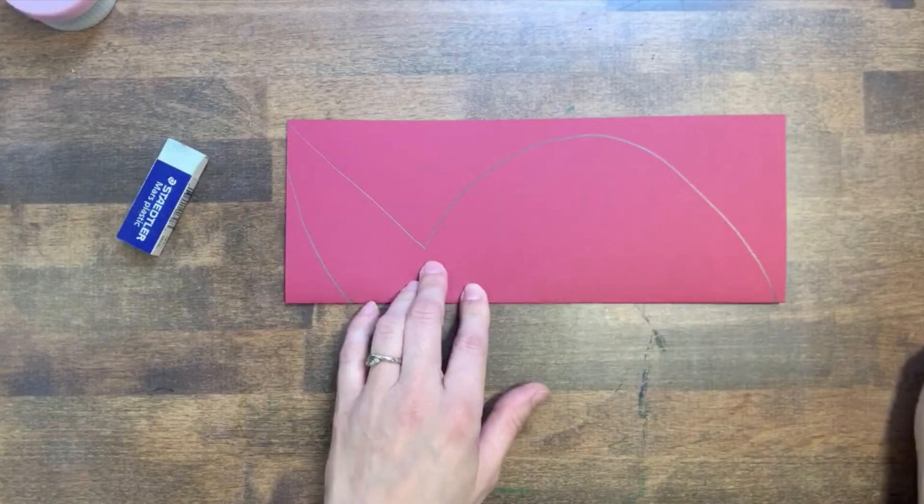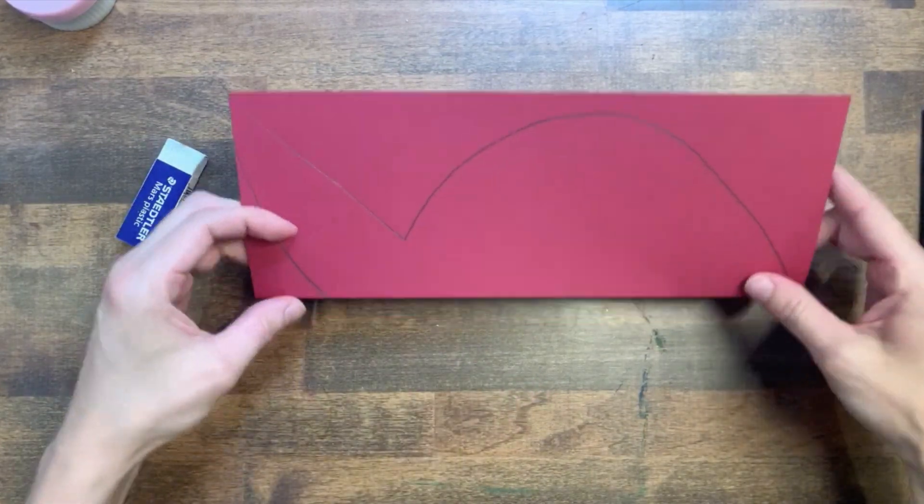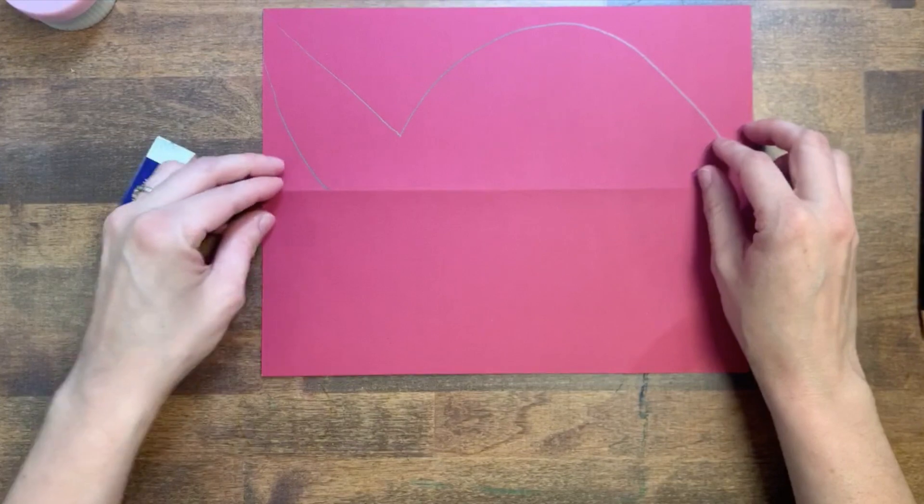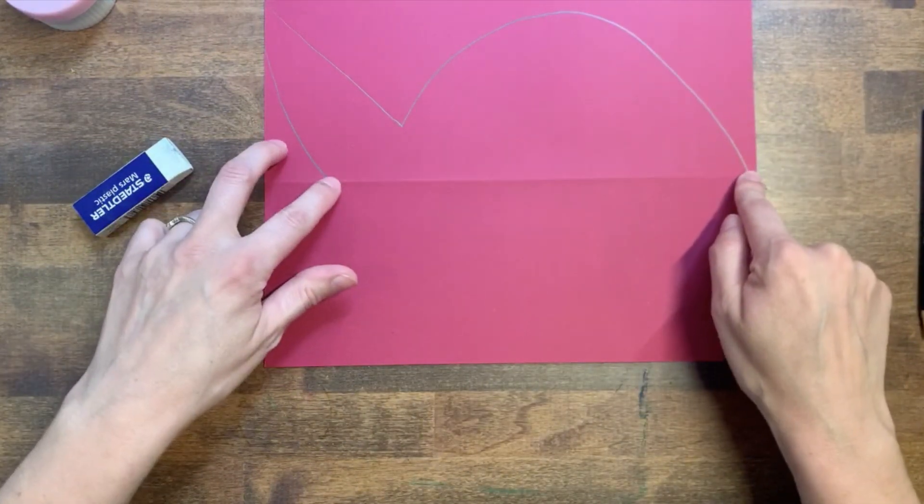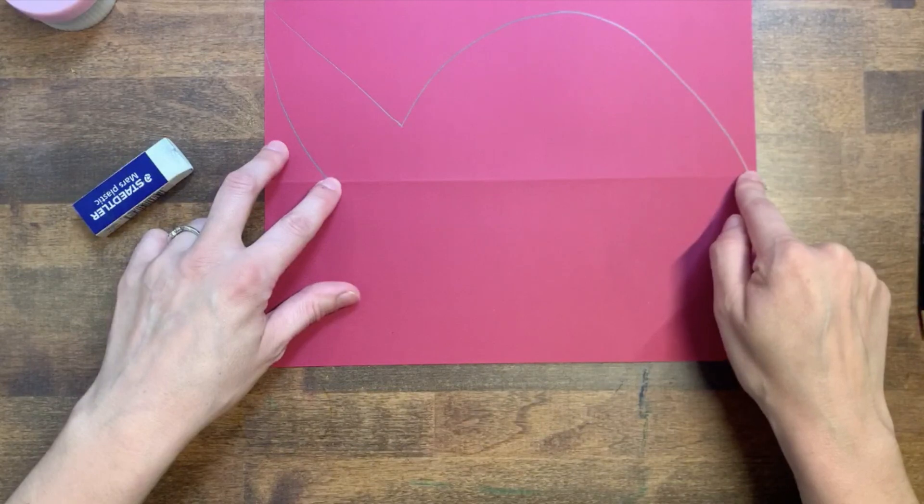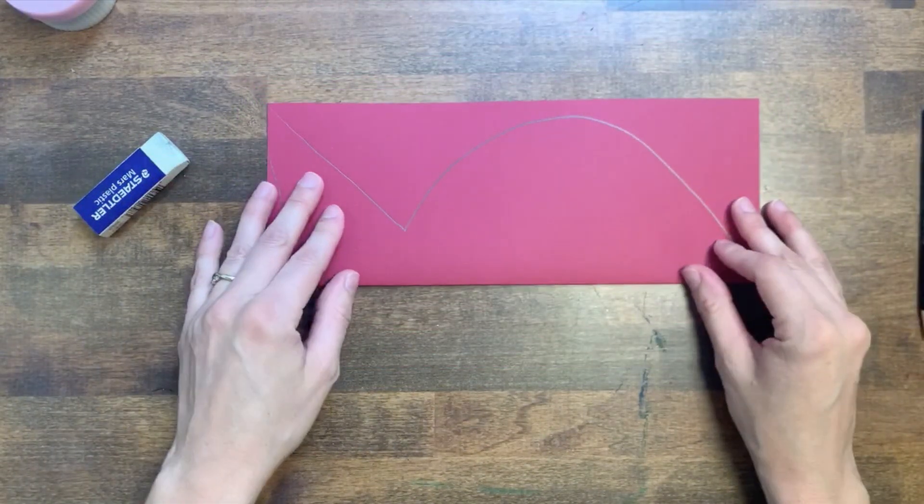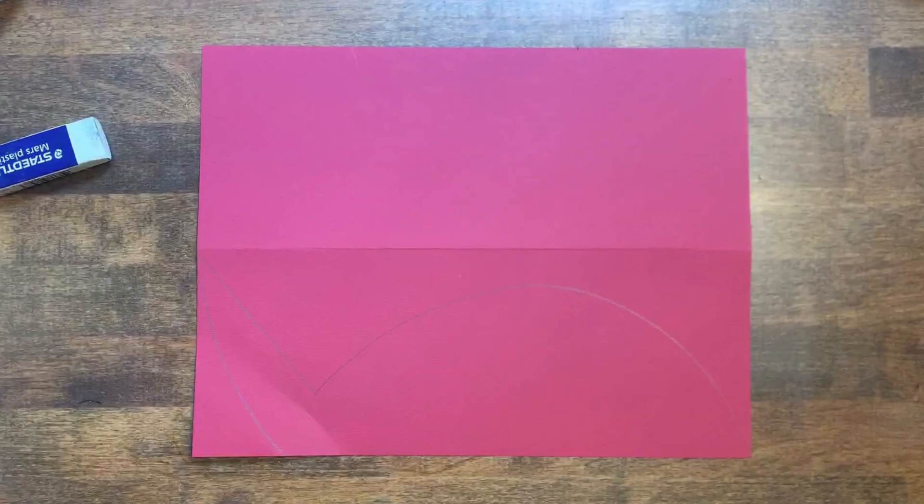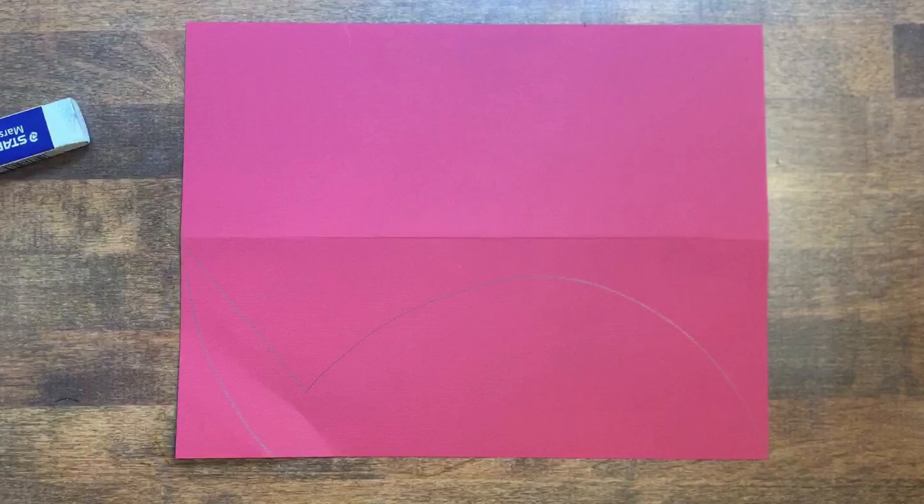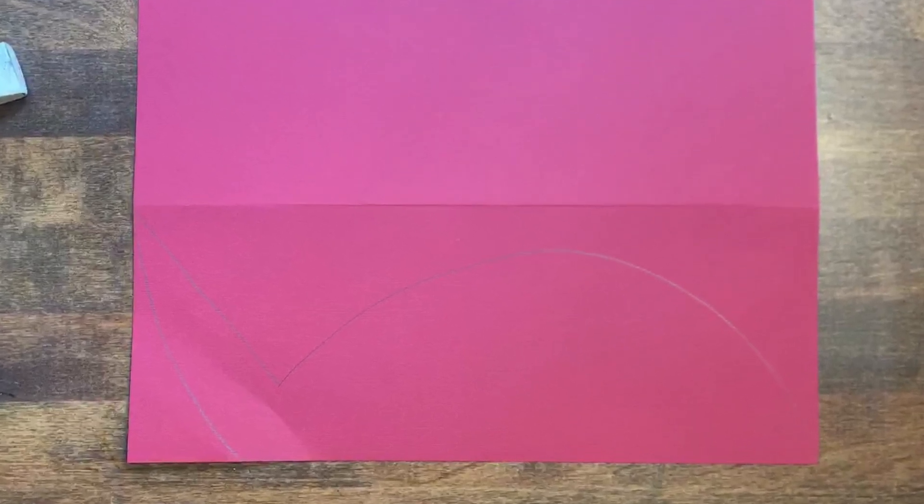Before we do anything else, we want to double check our work and make sure that the folded edge of the paper was in the right place. Unfold your paper. Does it look like the nose of your fish and the middle of the tail are touching the folded line? If so, you're good to go. Fold your paper back up and move on to the next step. If your fish looks like this, you had the folded edge of the paper facing away from you. Erase your line and try again. This time, pay close attention to where the folded edge of your paper is.